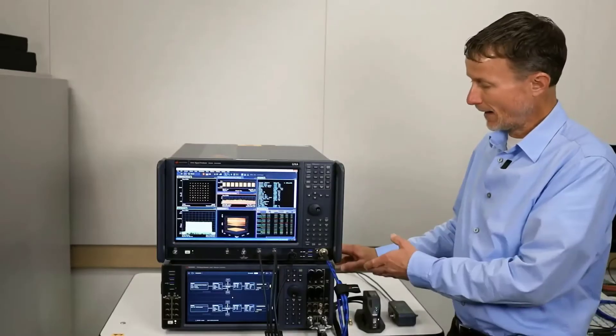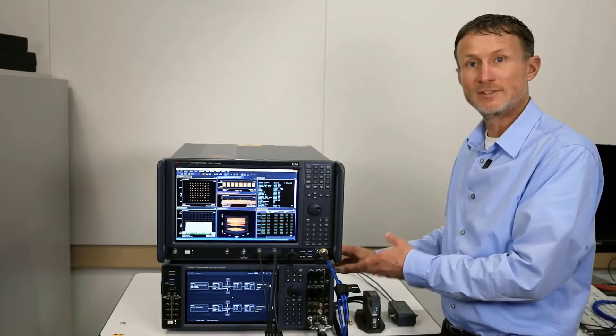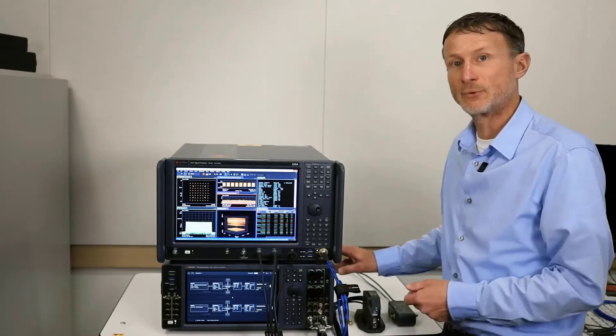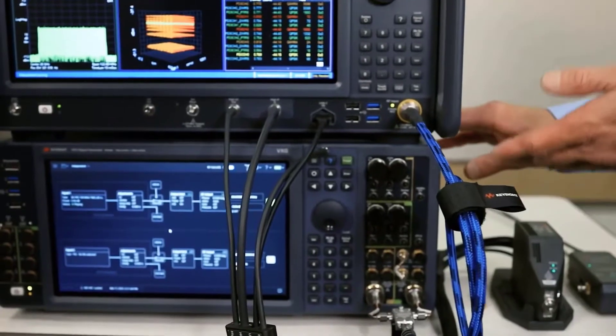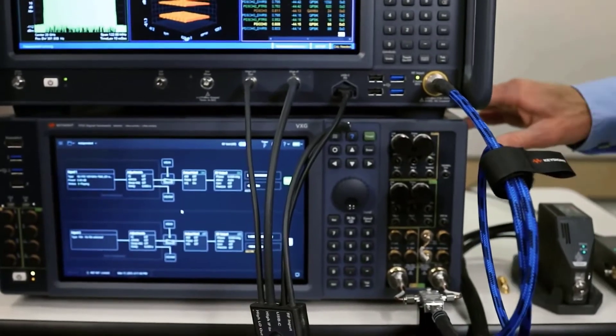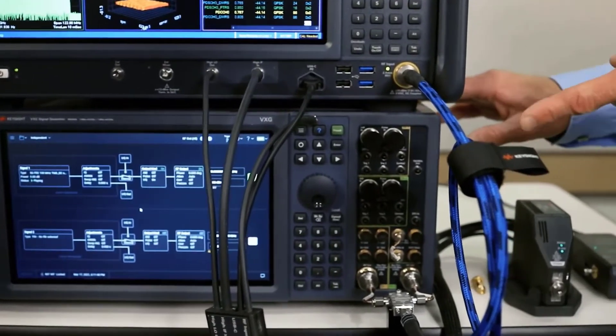So let's take a look at our demo setup today. In this setup, we have our VXG Vector Microwave Signal Generator with frequency coverage up to 44 gigahertz. It has two channels and really wide bandwidth capability that I'll show you in just a minute.